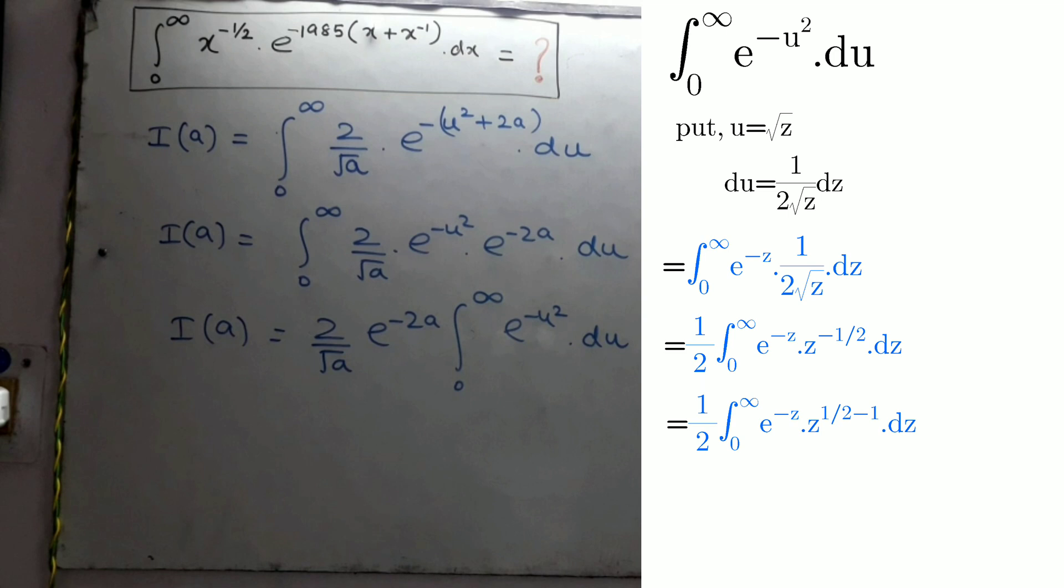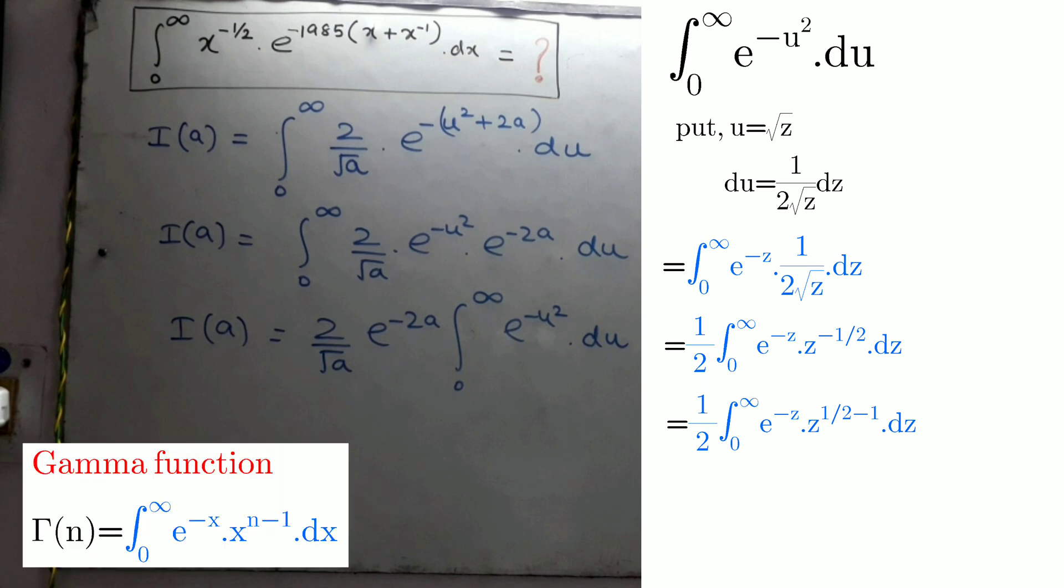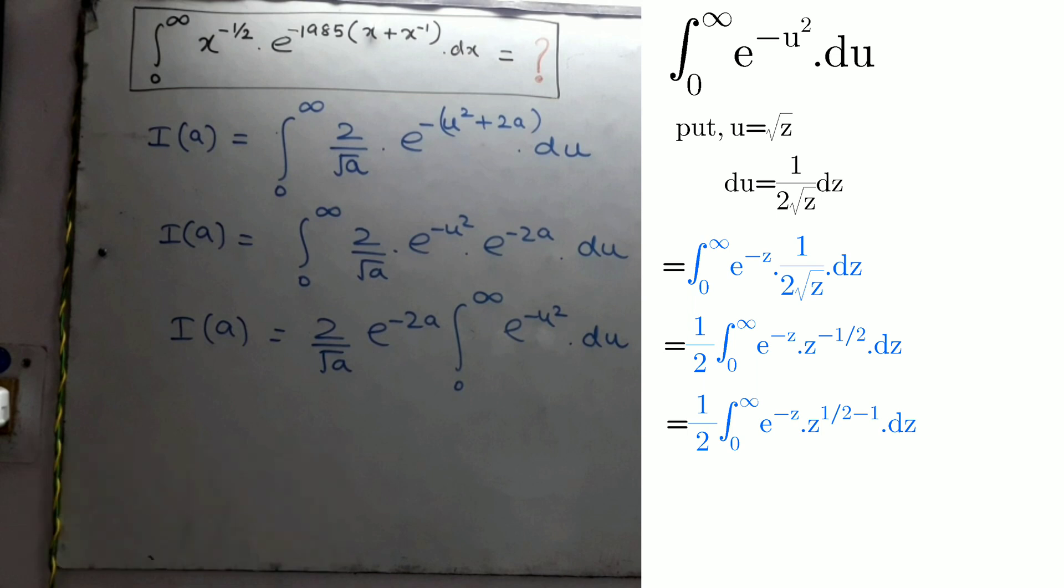As we know, this integral represents the gamma function where n equals 1 upon 2. Therefore, the integral value is gamma 1 upon 2 upon 2, where gamma 1 upon 2 is nothing but square root of pi.